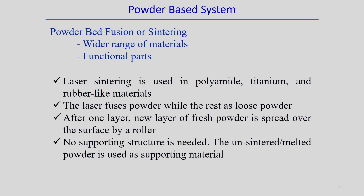Powder bed fusion or sintering processes can handle a wide range of materials and can develop functional parts. Laser sintering is mainly associated with polyamide, titanium, and rubber-like materials. The laser fuses the powder where focused while the rest remains as loose powder, acting as a support structure. After one layer, fresh powder is spread by a roller over the bed and the process repeats. No additional support structure is needed since the extra powder itself serves as support.